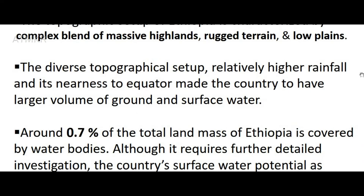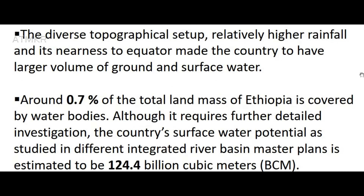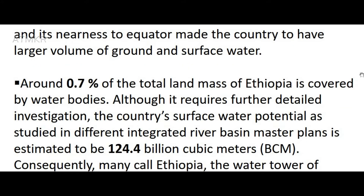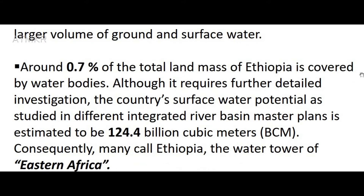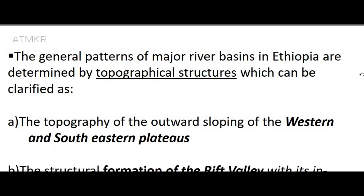Around 0.7% of the total land mass of Ethiopia is covered by water bodies. Although it requires further detailed investigation, the country's surface water potential as studied in different integrated river basin master plans is estimated to be 124.4 billion cubic meters (BCM). Consequently, many call Ethiopia the water tower of eastern Africa. The general patterns of major river basins in Ethiopia are determined by topographical structures.